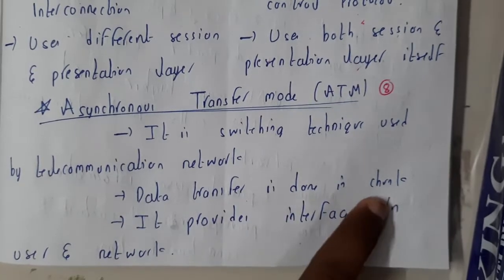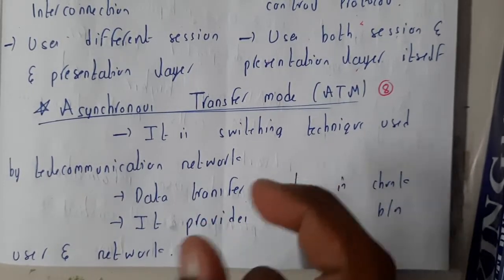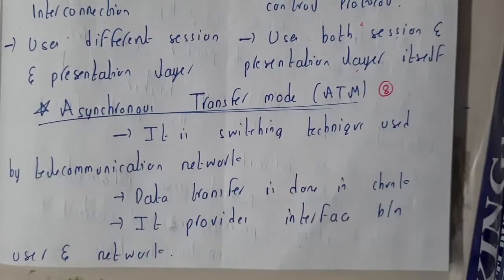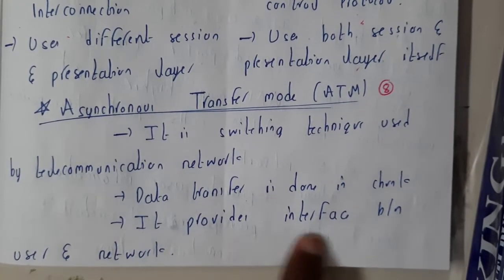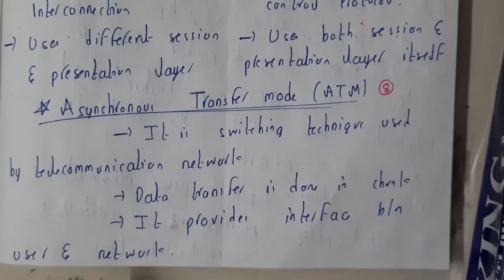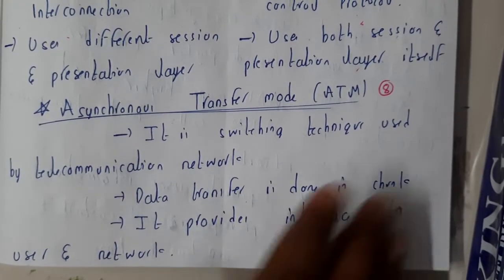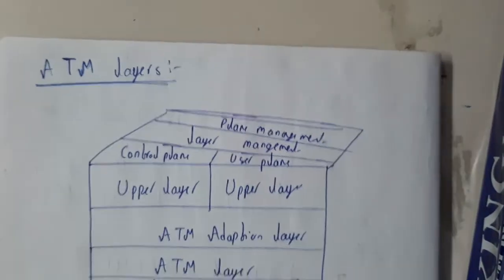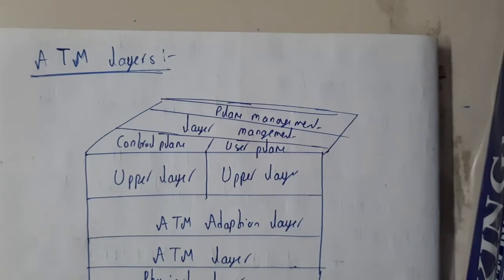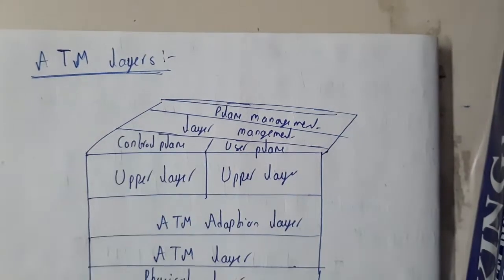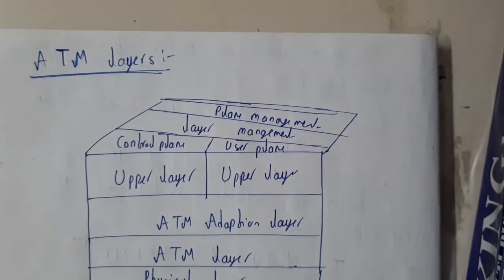Data transmission is done in chunks — a chunk is nothing but a small group of data, group of messages, or group of voice. ATM provides the interface between the user and the network, taking care of the interaction between us and the network.